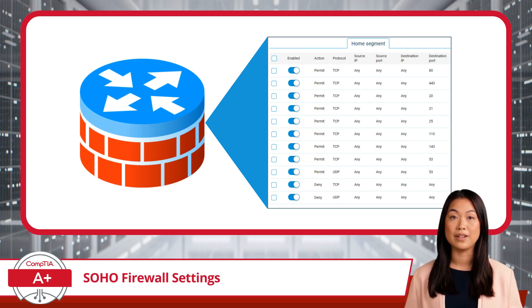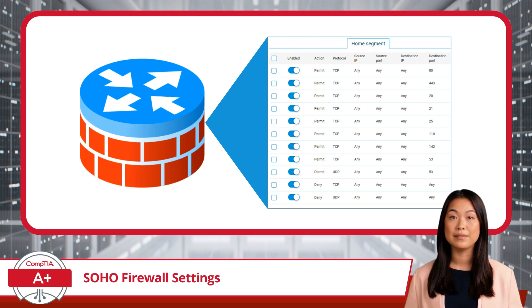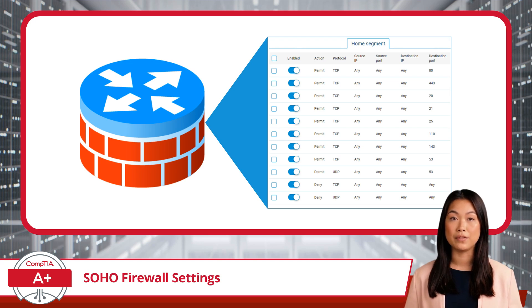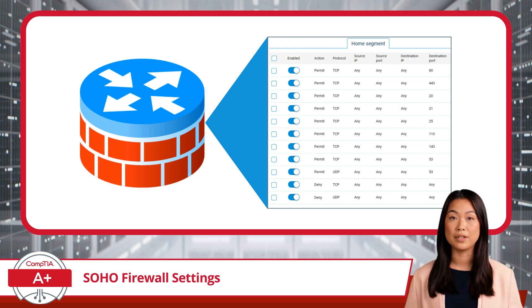One final point: Universal Plug and Play, or UPnP, can automatically open ports. If you want to maintain strict control over which ports are open, you may need to disable this feature to ensure that only your specified ports are allowed.